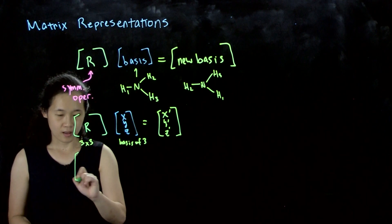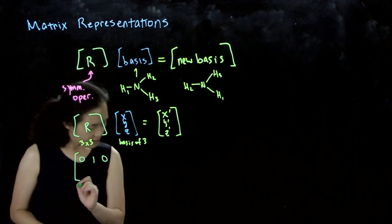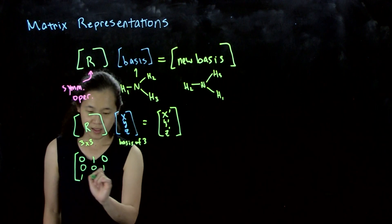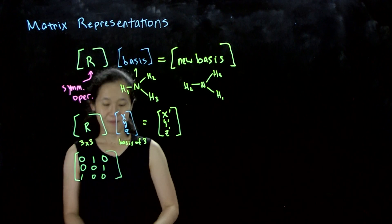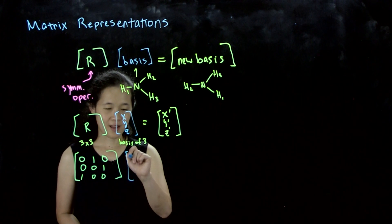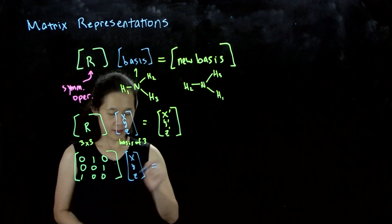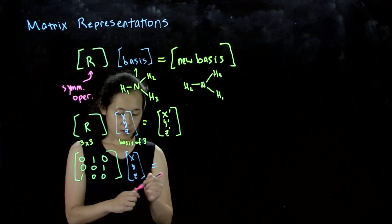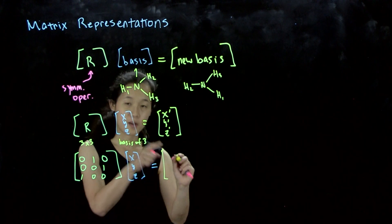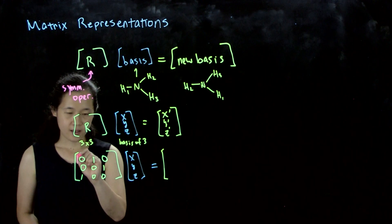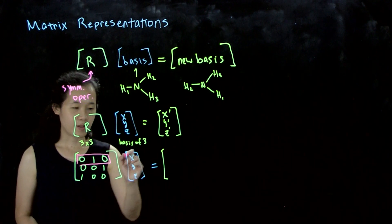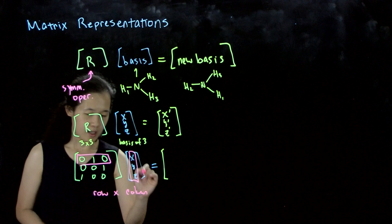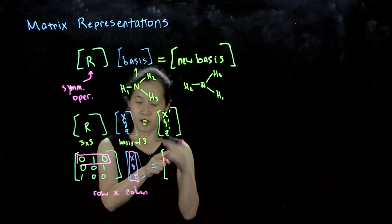Let's do a demonstration. If R is the matrix [0 1 0; 0 0 1; 1 0 0], multiplying this by XYZ - I'll review matrix algebra. The way you do matrix multiplication is row by column. This first element is going to be this row multiplying down XYZ, so it's 0X plus 1Y plus 0Z.